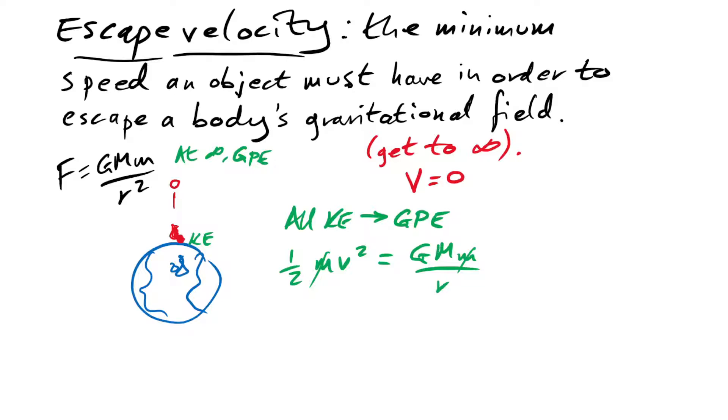So that's why we say the minimum speed an object must have, not per kilogram or something like that. And finally if we rearrange this we find that the escape velocity is given by square root of 2GM over r.